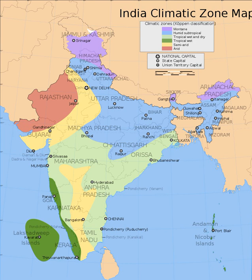India has a large variation in climate from region to region due to its vast size. India experiences climate from four major climate groups, which can be further subdivided into seven climatic types.